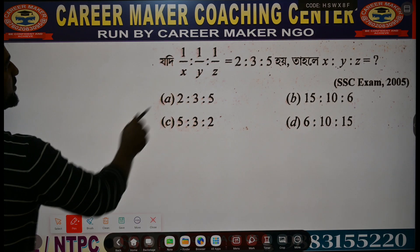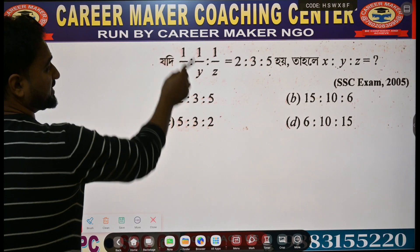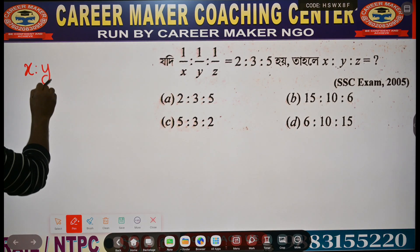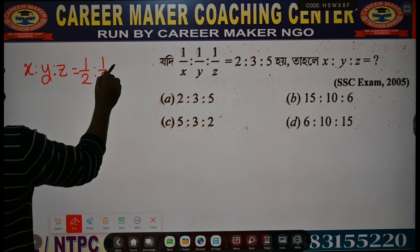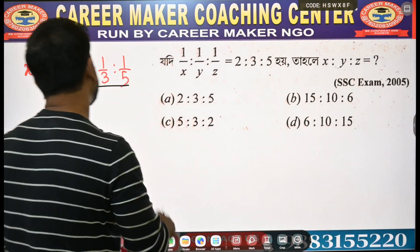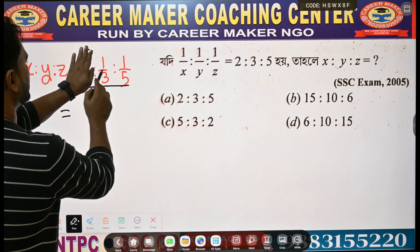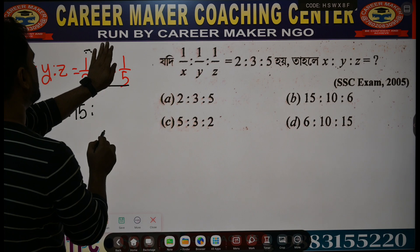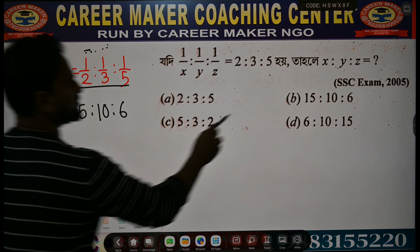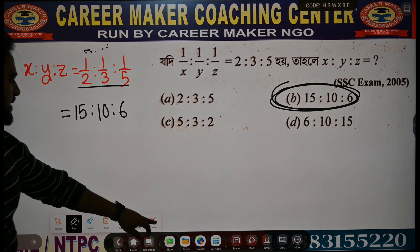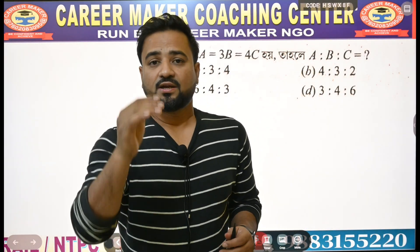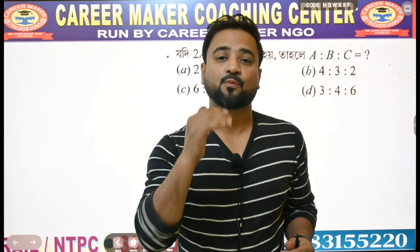Next: 1 by x is to 1 by y is to 1 by z equal to 2 is to 3 is to 5. Find x, y, z. Since reciprocals are given, flip them: x is to y is to z equal to 1/2 is to 1/3 is to 1/5. Multiply through by LCM — first pair gives 15, second gives 10. So x is to y is to z equal to 15 is to 10 is to 6.